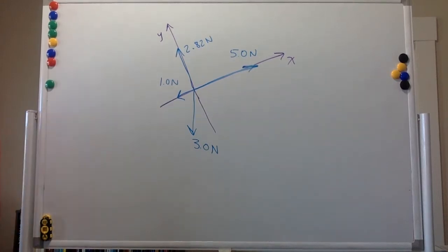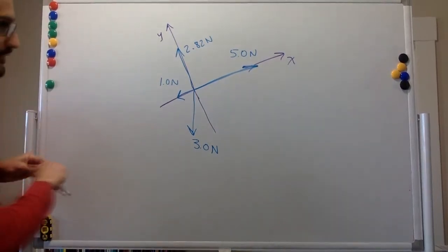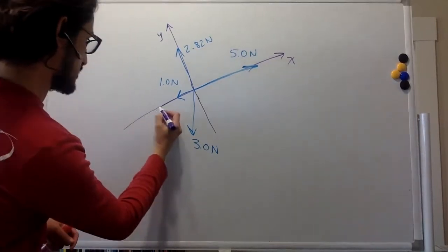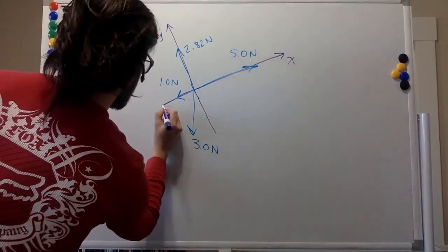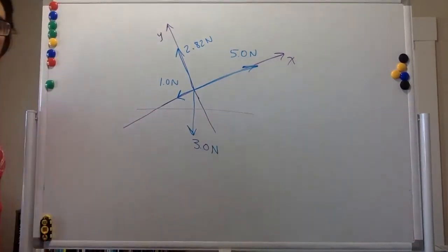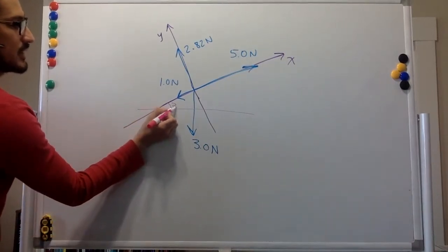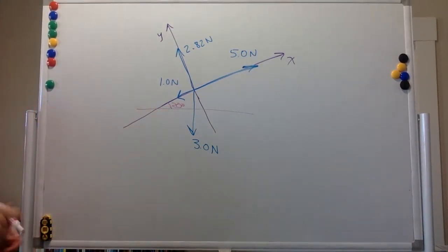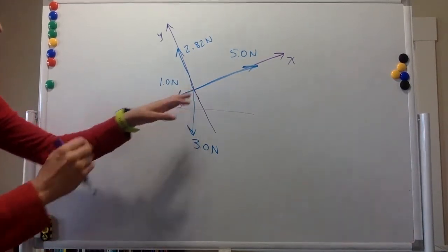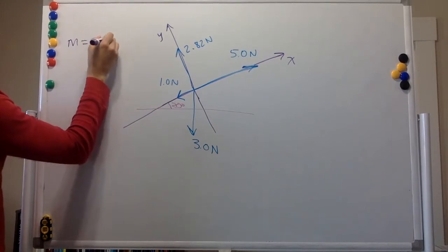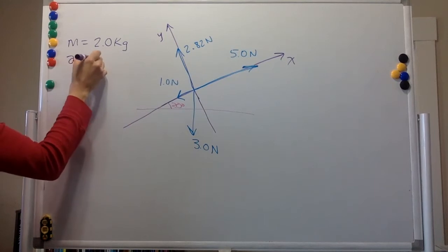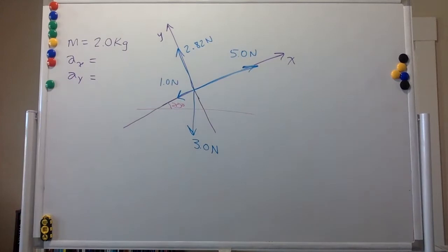The angle over here — if you draw a horizontal line over here, then this angle is 20 degrees. We are given these forces. We are told that the mass of the object is 2 kilograms, and you are asked to calculate the values of the acceleration in x and the acceleration in y.